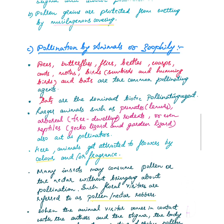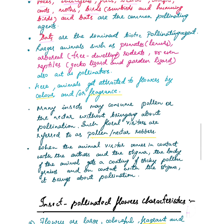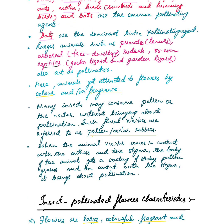Pollination by animals is called zoophily, and it is an important topic that can be asked for 3 or 5 marks. The main pollinating agents include bees, butterflies, flies, beetles, wasps, ants, moths, birds like sunbirds and hummingbirds, and also bats. Bats are the dominant biotic pollinating agent. Larger animals such as primates like lemurs, and even reptiles and garden lizards, also act as pollinators.